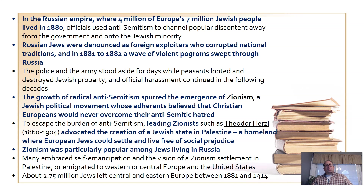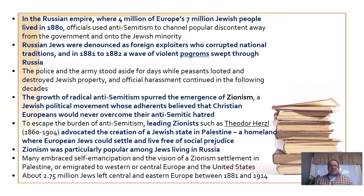The pogroms sweeping Russia created a movement among Europe's Jews — especially Russian Jews — to leave Europe entirely. Having endured centuries of antisemitism, why not return to Jerusalem, their original homeland? This triggered the Zionist movement, a desire to create a Jewish homeland in Palestine — the land in and around Jerusalem in the Middle East. The problem was that Arab Muslims already inhabited that land, meaning reestablishing a Jewish homeland would require displacing them. This Zionist idea, championed by Theodor Herzl, would bear fruit after World War I.